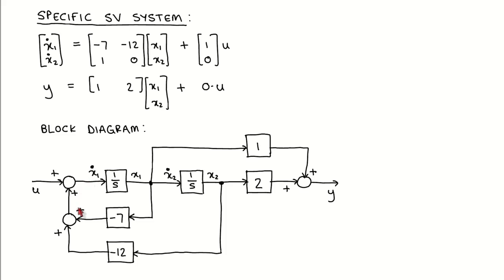x1 dot is given by minus 7 times x1 plus minus 12 times x2 plus U, which is the same as the first line of the state equation.